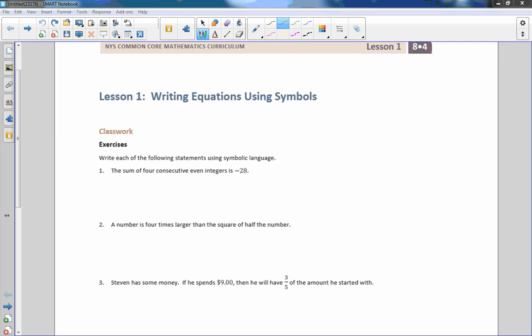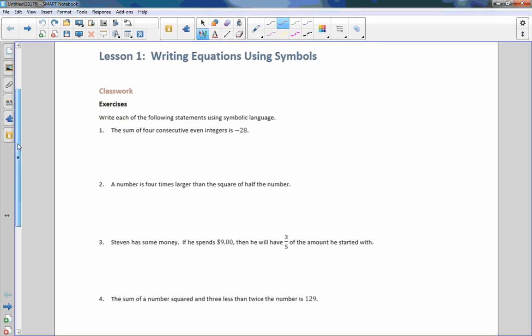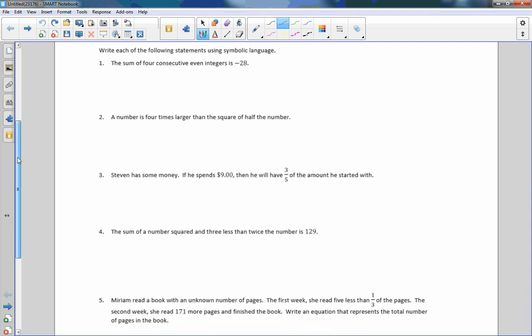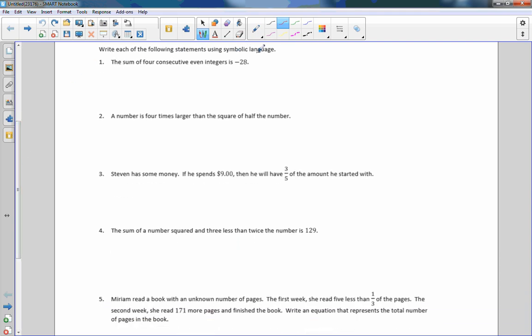So the classwork exercises that we're going to do is to convert sentences into mathematical equations. Number one says, write each of the following statements using symbolic language: the sum of four consecutive even integers is negative 28. Now before I go on here, this is a very common type problem, consecutive. Keep in mind that our even numbers are 2, 4, 6, 8, 10, and so on. Even numbers.